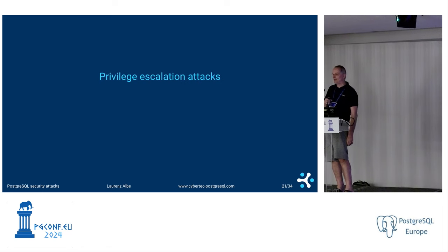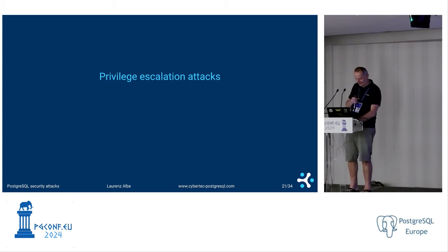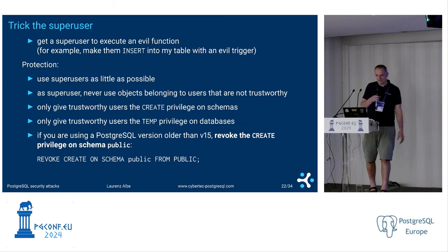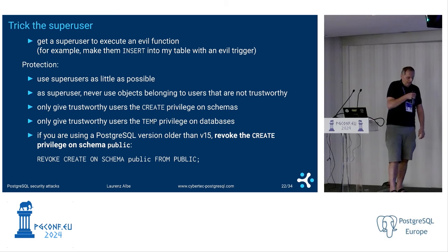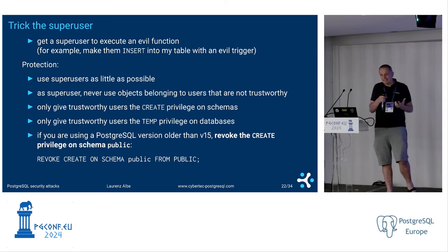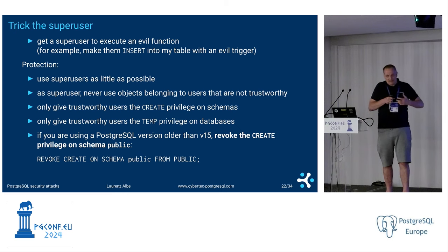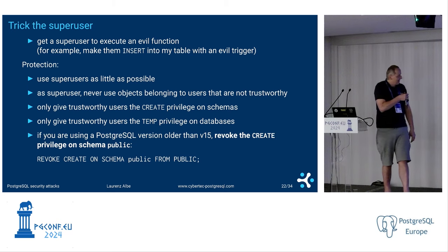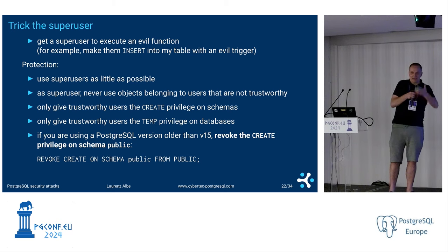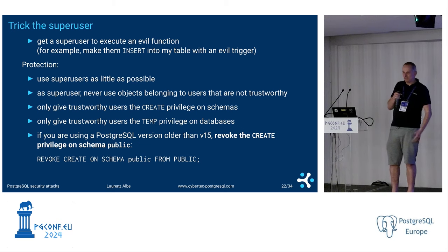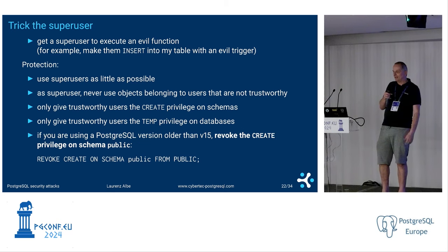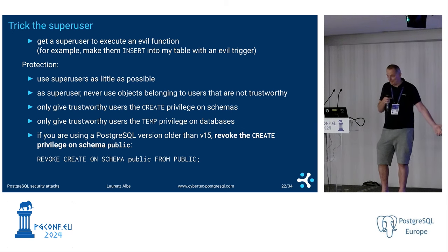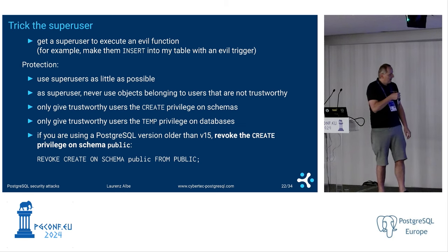Now to the really juicy part: privilege escalation attacks. You're authenticated to the server and you want to escalate your privileges. The basic idea is always the same — you create some nasty object and you trick a superuser into using it one way or another. A classical one is: I create a table, write a trigger function on it, and get a superuser to run a data modification statement that triggers my trigger. The trigger runs with superuser permissions. Game over.